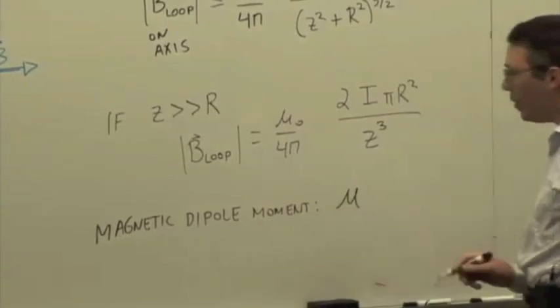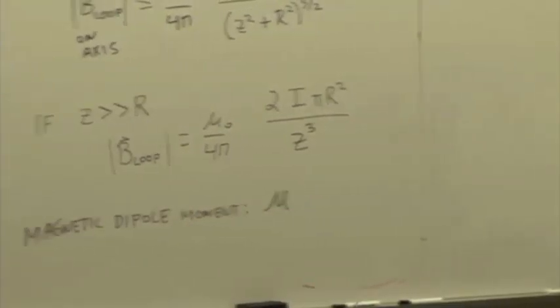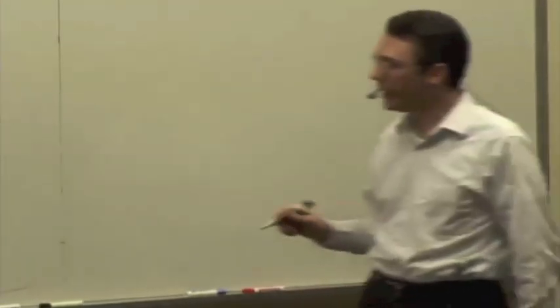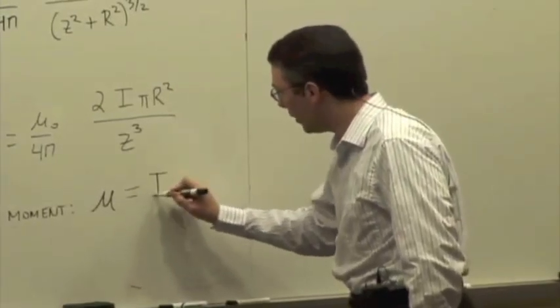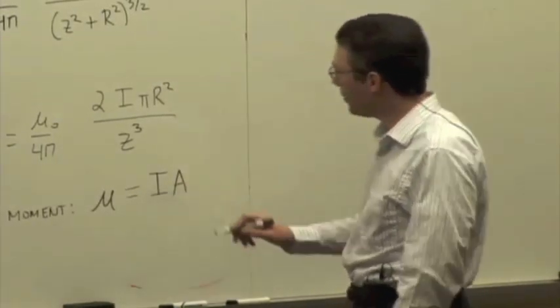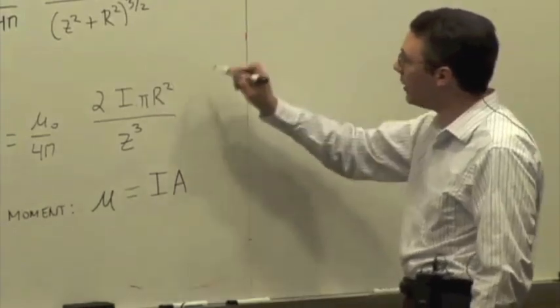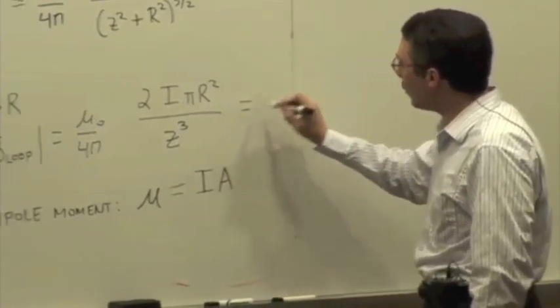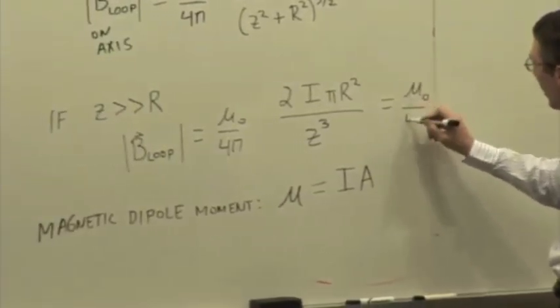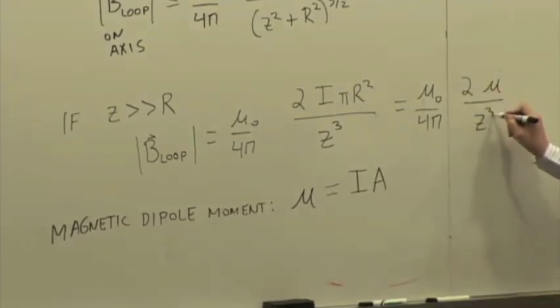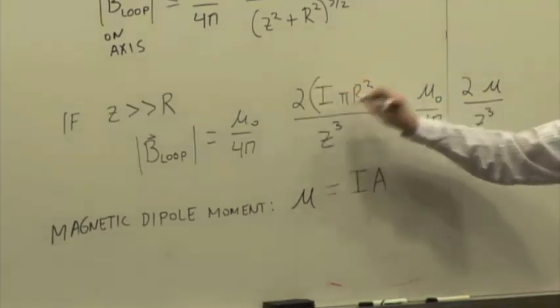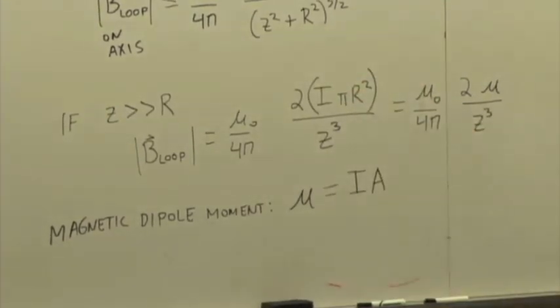We also introduced at the very end last time magnetic dipole moment. We use the symbol μ, Greek letter mu without the little sub-zero, so it's a different quantity. It's defined to be, for a single loop, just the current times the area. So for a circular loop, the area is πR². We could rewrite this as μ₀/4π × 2μ/z³, combining the current and the area into a single quantity.